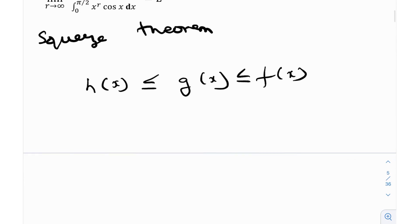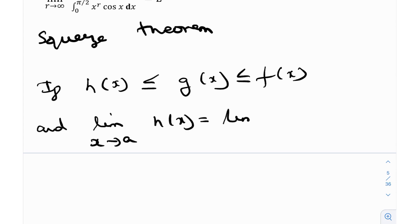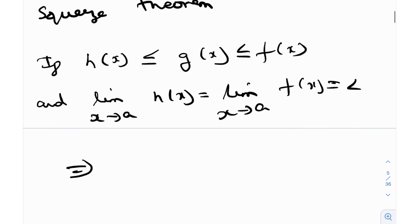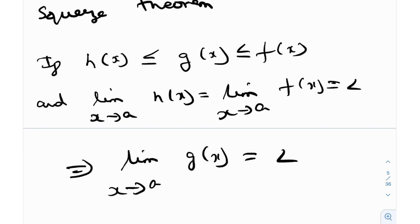Now, if this happens and we know that the limit as x tends to A of H of x equals the limit as x tends to A of F of x, and let that equal L, then that implies the limit as x tends to A of G of x will also be equal to L. It's very intuitive and has some pretty cool applications — some non-standard limits which can't be solved by L'Hôpital can easily be done by the squeeze theorem. We'll save our full discussion of it until the end.